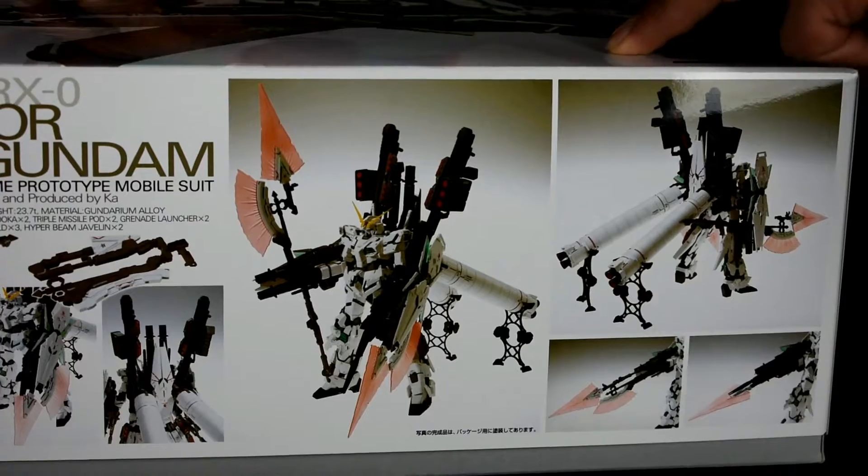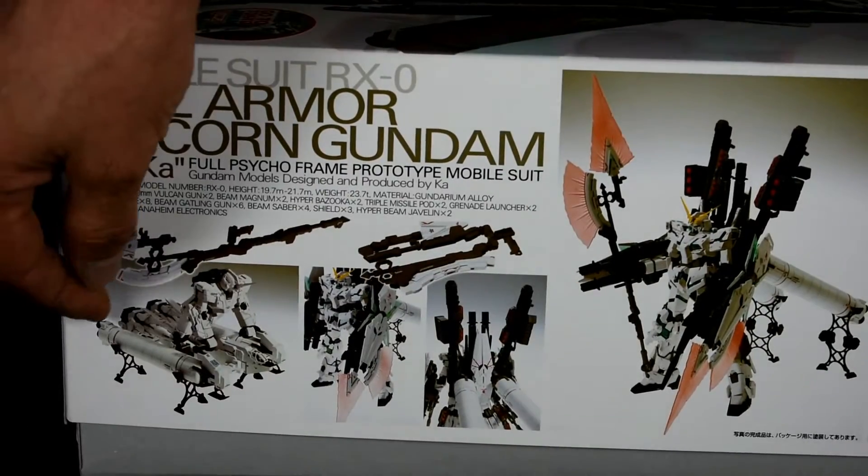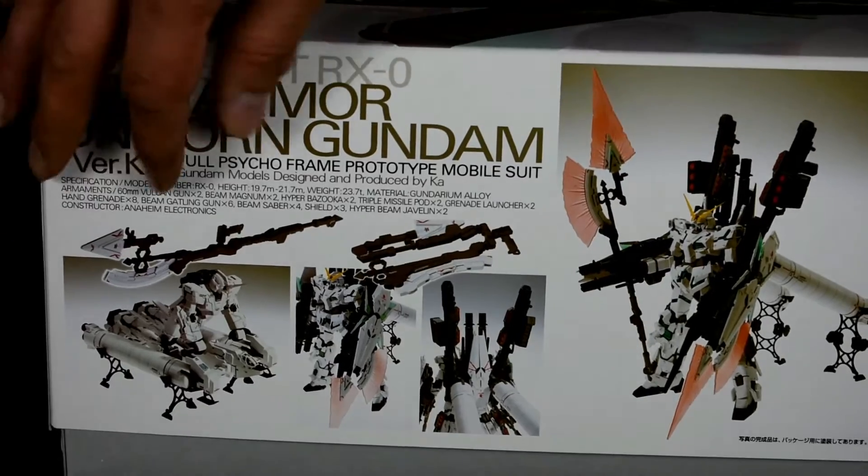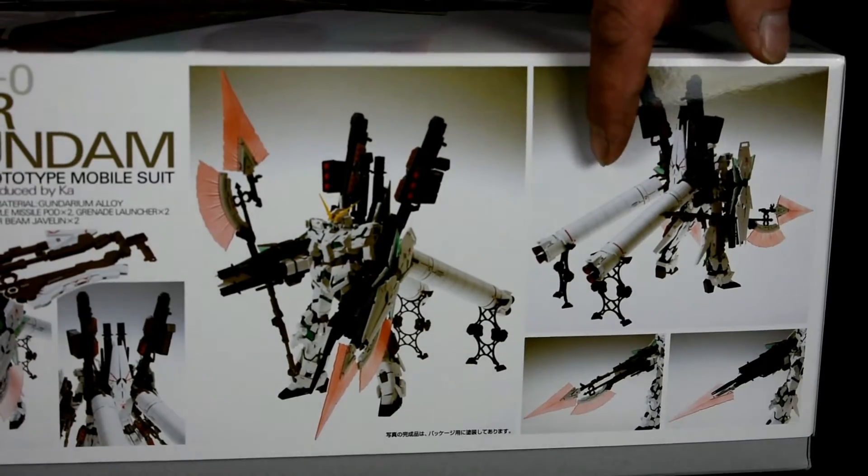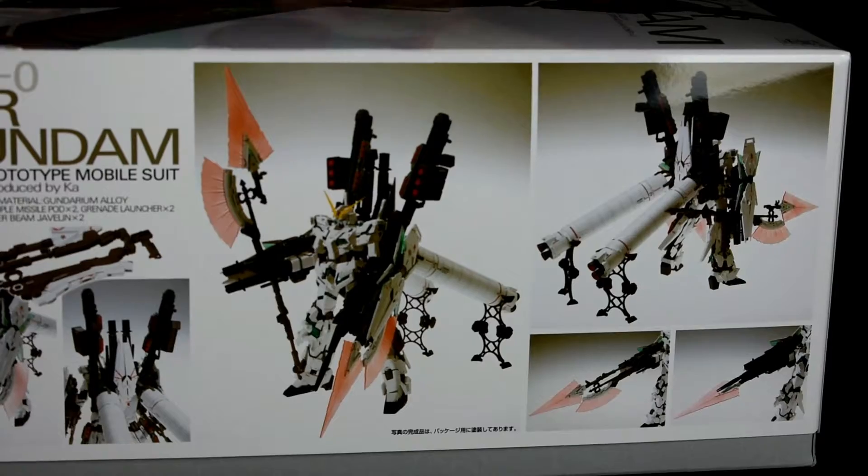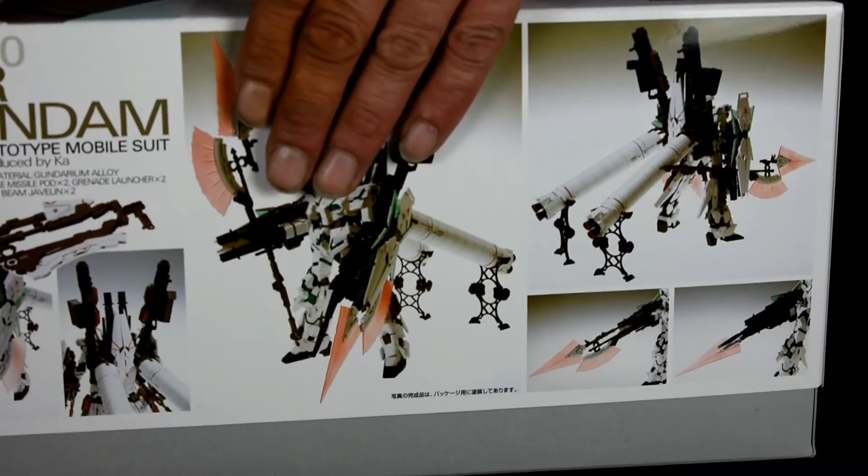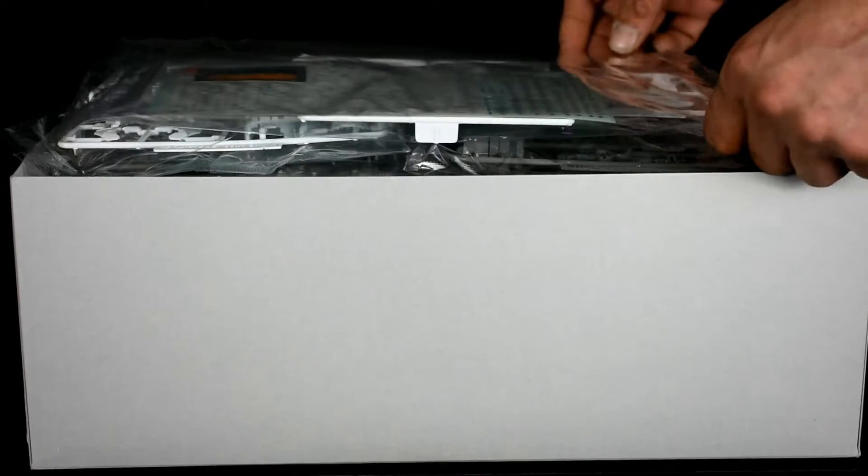Here we've got some pictures of what the model will look like completed: lying on the fuel tanks, some of the weapons, standing up pose, repose, and some of the weapons. This does retail for 8,000 yen in Japan.